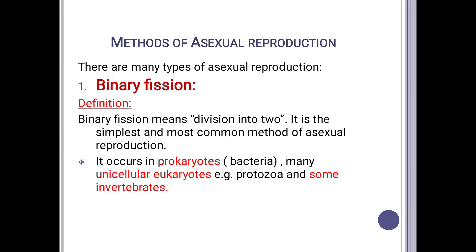There are many types or methods of asexual reproduction. Some of those are binary fission, fragmentation, multiple fission, budding, spore formation, and parthenogenesis, etc. In today's topic we are going to discuss binary fission in detail.